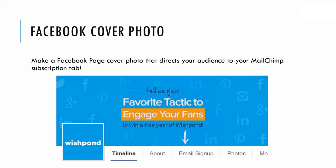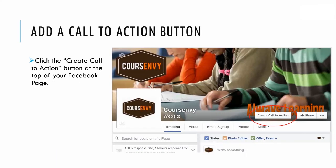Next, I like to make a Facebook cover photo that directs my audience to my MailChimp subscription tab. As you can see, I have a header image with an arrow pointing down to my email signup tab. Simply create an engaging cover photo that includes an arrow pointing down to the email signup tab or the call to action button.